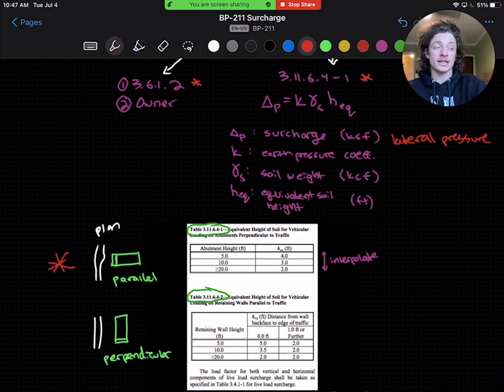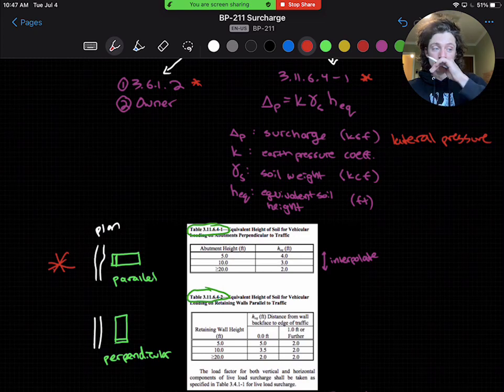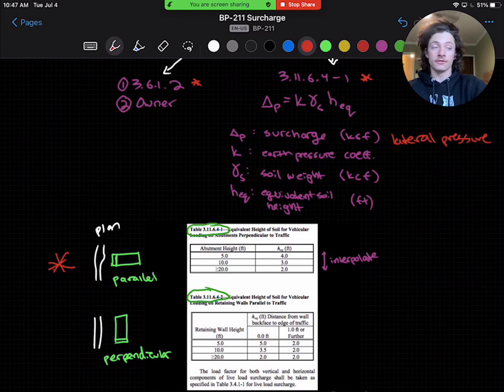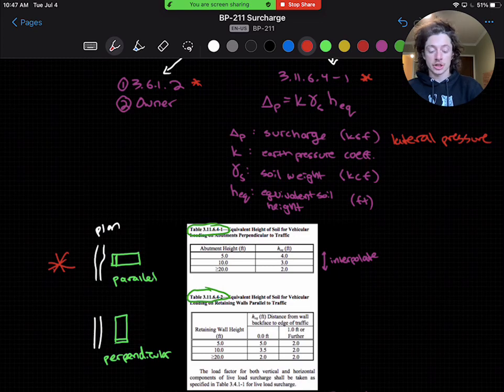The table gives us an equivalent height of soil for the vehicular loading, and then we can apply this in our equation to calculate the lateral pressure per foot of retaining wall. We'll also want to interpolate between those values for abutment height to get our equivalent heights.